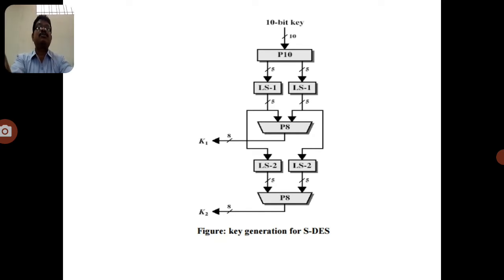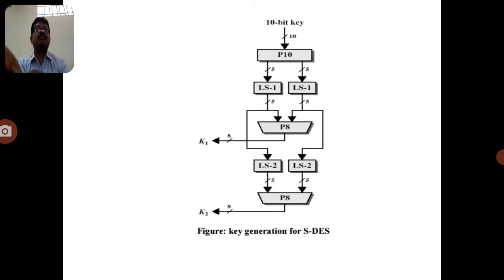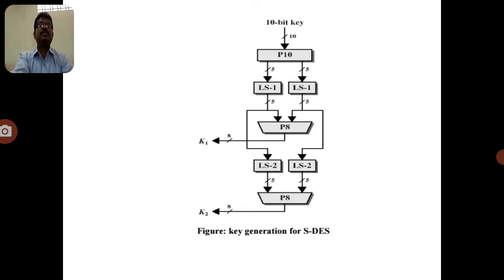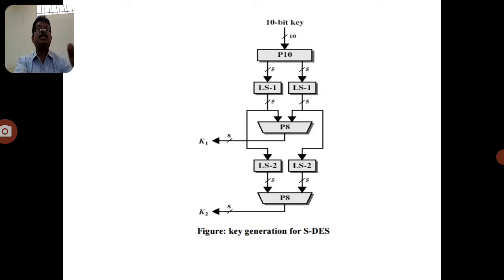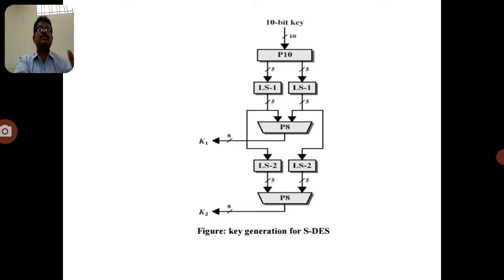In transposition techniques, there are two types: row-wise transposition and column-wise transposition. Row-wise transposition arranges the given plain text in a diagonal form and reads it in a sequential manner. In column-wise transposition, data is arranged column by column — first column, second column, third column, and so on — and we divide the data in that particular order.